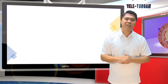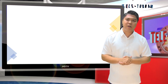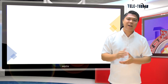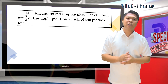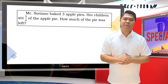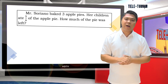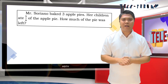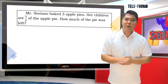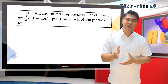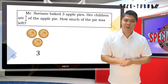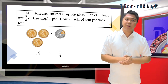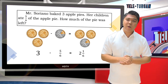Now, let's talk about subtraction of fraction from whole number. Let's have this word problem. Mr. Soriano baked 3 apple pies. Her children ate 5/6 of the apple pie. How much of the pie was left? Let's see this illustration. 3 minus 5/6 is equal to 2 and 1/6.